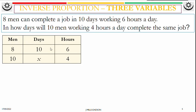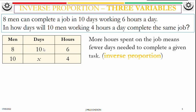More hours spent on a job mean fewer days needed to complete a given task. That's inverse proportion. So days and hours are inverse - up down.